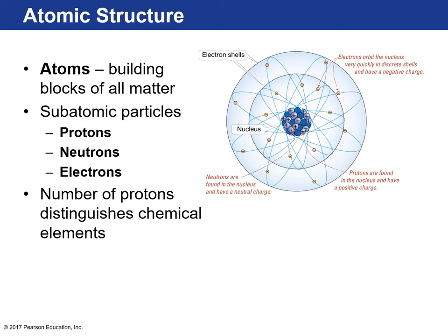Looking at atomic structure: atoms are the building blocks of matter, made up of subatomic particles — protons, neutrons, and electrons. Protons are found in the nucleus; they're positively charged and have mass. Neutrons have no charge but also have mass and are found in the nucleus. Surrounding the nucleus are electrons, which have negligible mass and a negative charge — they orbit the nucleus in various electron shells.